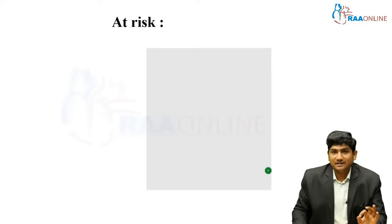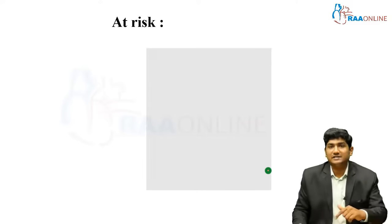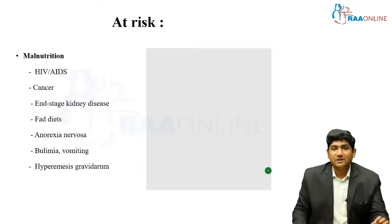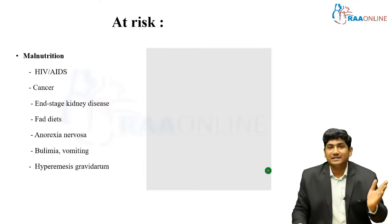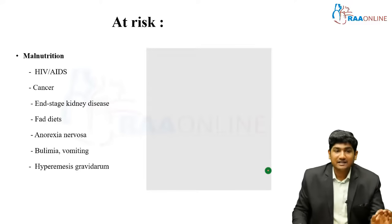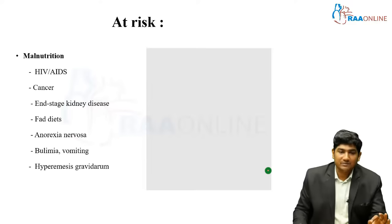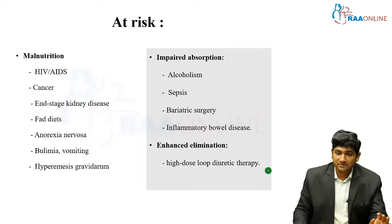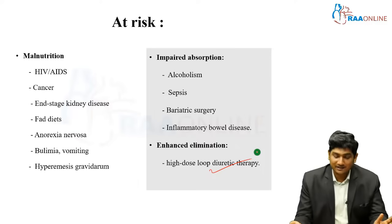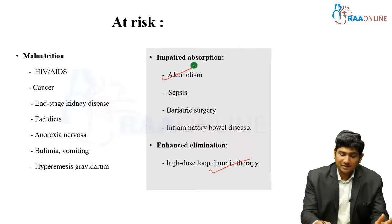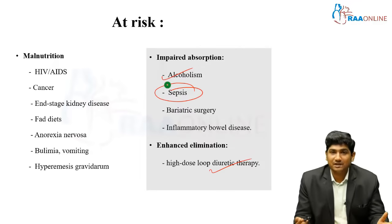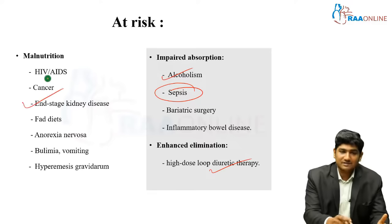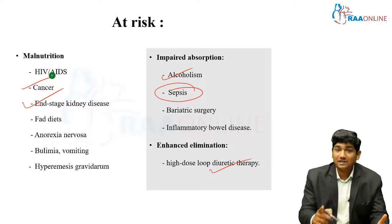Thiamine is present in both vegetarian and non-vegetarian diets, so who are the at-risk populations? Patients who are malnourished or severely cachectic — HIV/AIDS, cancer, end-stage kidney disease, fad diets, anorexia nervosa, bulimia, vomiting, hyperemesis gravidarum — and those with impaired absorption such as alcoholism, sepsis, bariatric surgery, inflammatory bowel disease, or enhanced elimination due to high-dose loop diuretics. Diuretics are used widely in the ER and ICU; alcoholism and sepsis are very common; CKD and cancer are common. Thiamine deficiency can be very common in your practice.